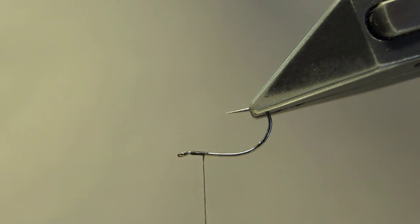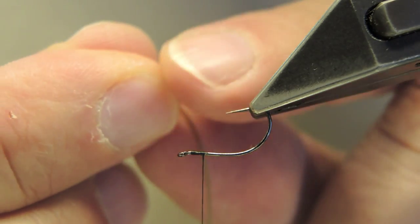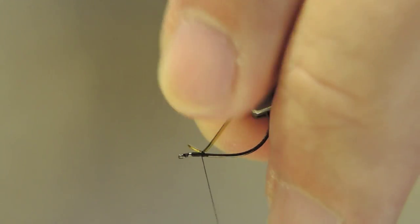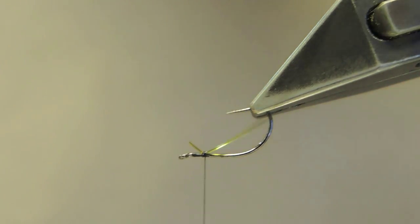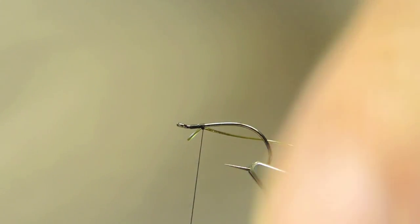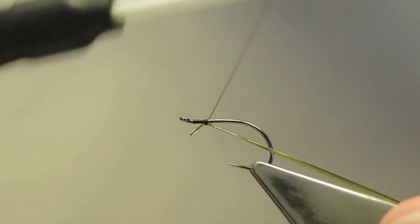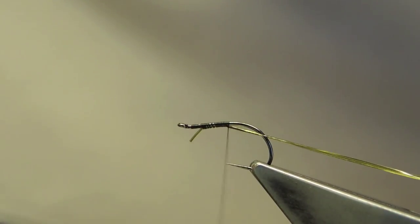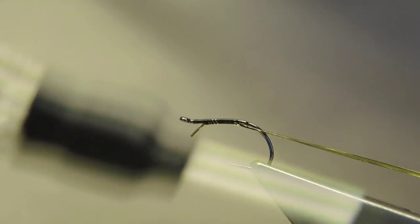The ribbing material, some D-rib in olive size small, tied in underneath and kept there. Slight tension as I wrap the thread closer to the bend.